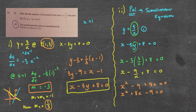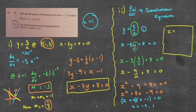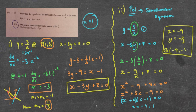Rearranging: x squared plus 8x minus 9 equals 0. Hopefully we can solve this via factorising: that gives x plus 9 times x minus 1 equals 0. Therefore x equals negative 9 and x equals positive 1. We've already got x equals 1, so the solution we're looking for must be x equals negative 9. When x equals negative 9, y equals 3 divided by negative 9, which is negative 1 third. So Q is at the point (negative 9, negative 1 third).